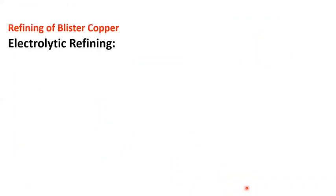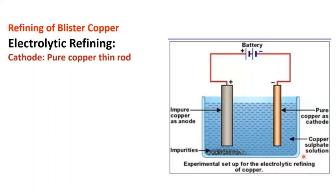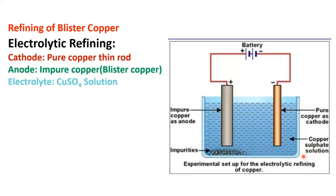Blister copper is now subjected to further refining by electro-refining. In this process, impure copper (from blister copper) is taken as the anode, pure copper as the cathode, and copper sulfate solution as the electrolyte in an electrolytic cell.